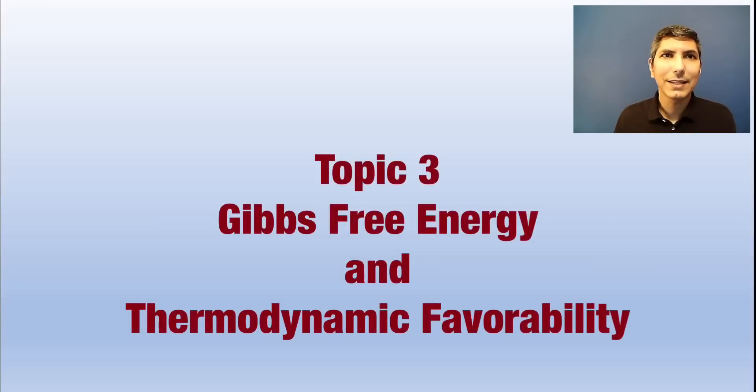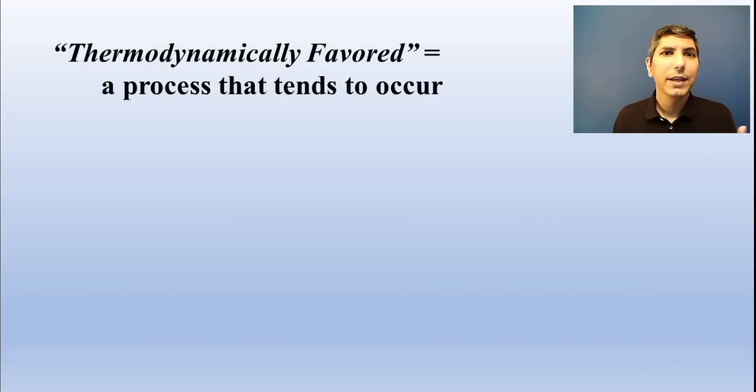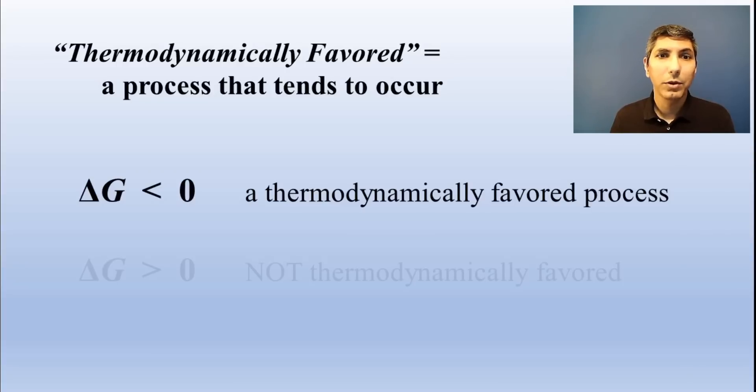When a process tends to occur, we say it's thermodynamically favored. Gibbs free energy is a measure of the thermodynamic favorability of a chemical process, and it's abbreviated delta G. When delta G is negative, it's a thermodynamically favored process. When delta G is positive, it's not favored.